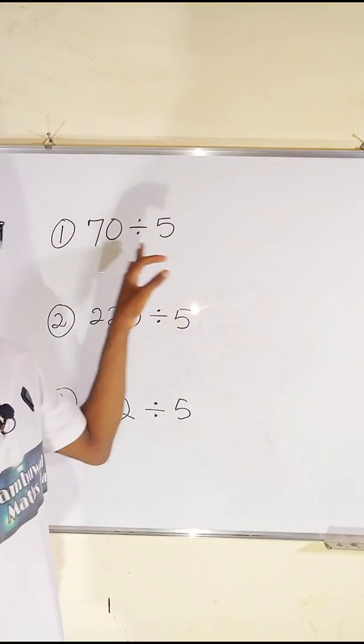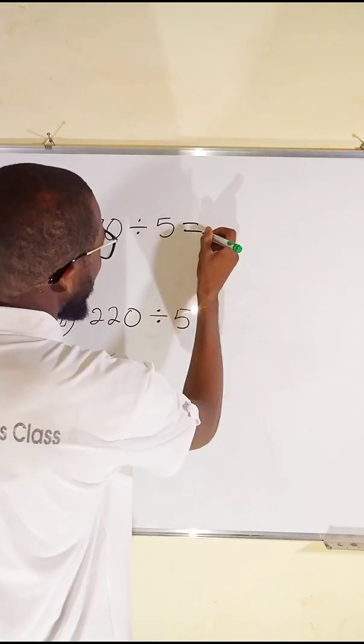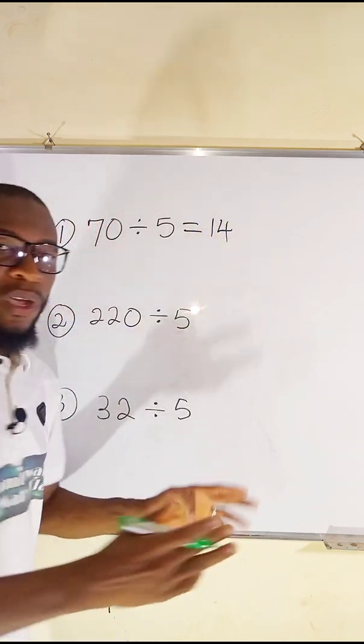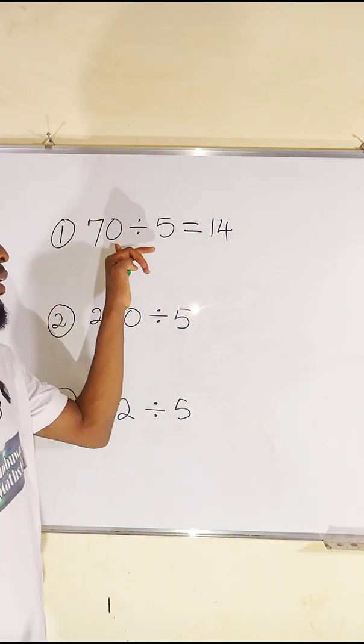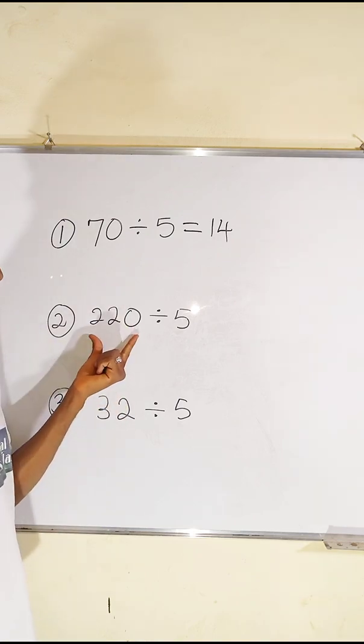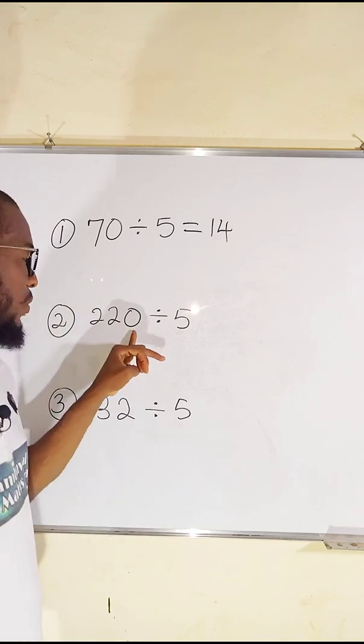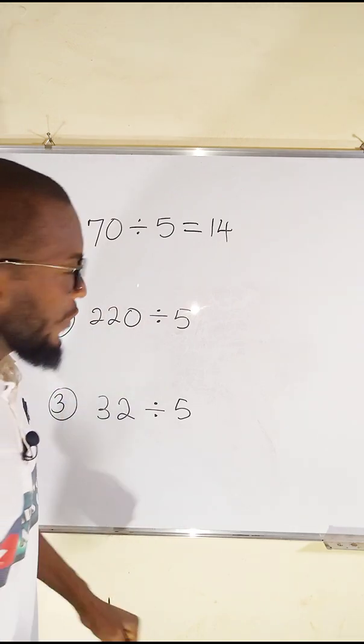The first one is 70 divided by 5. The result of this problem is nothing but 14. All you have to do is eliminate the zero and double the first digit. Secondly, we have 220. Just eliminate the zero and double this number, and you have 44.